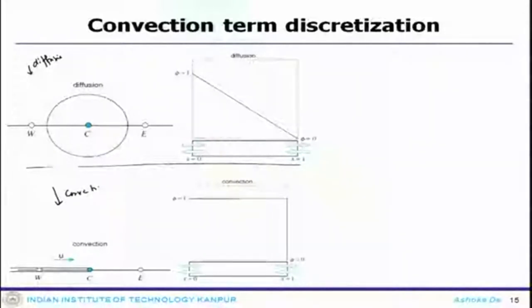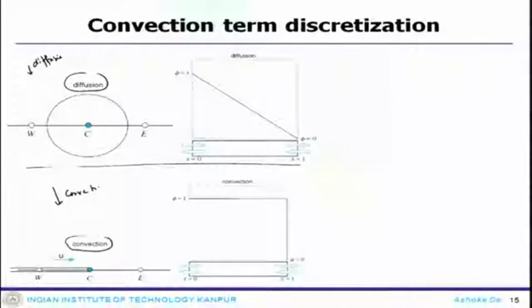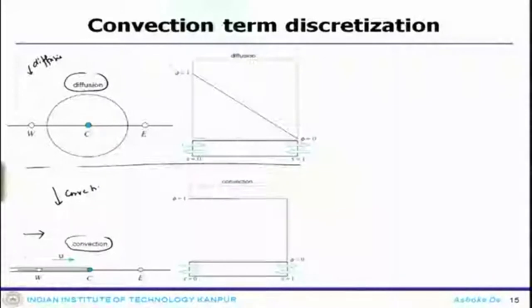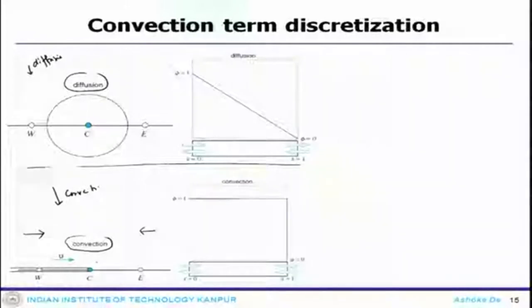The assumption of a linear profile, which assigns equal weight to both upstream and downstream nodes, can be a good approximation for a diffusion system, but cannot be a good approximation for a convection-diffusion system because it does not take care of the directional preference. If U is moving in this direction, then the scalar is being transported from left to right, and the weightage must be provided to the node on the upstream side. When you assume a linear profile or central difference scheme, this does not account for these directional properties.